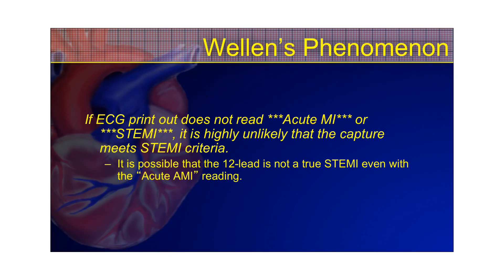Another 12-lead EKG change worth talking about is Wellens phenomenon. Wellens phenomenon is a change in the T-waves — one of the more common Wellens patterns is a biphasic T-wave that goes up and then down, seen in the anterior or precordial leads. You could also just have a deep inverted T-wave in those precordial leads.